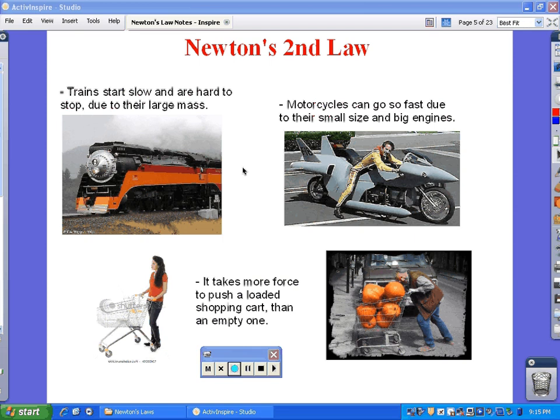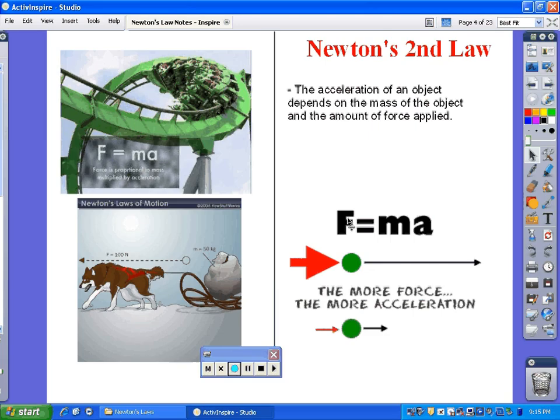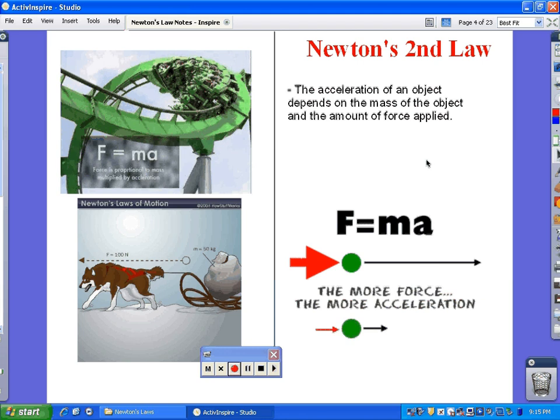Inversely, motorcycles can go very fast because they're really small. They have a lot of force that can be generated from the little engine and a small mass. You combine a lot of force plus small mass—what does it do? It accelerates fast. That's exactly what F equals ma says. If you increase the force and decrease the mass, it will go fast.